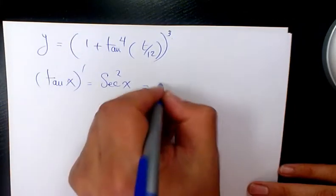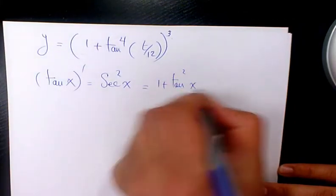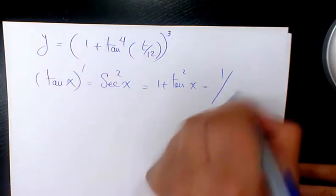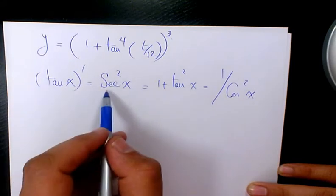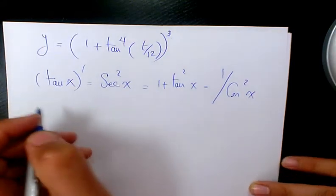Or, it's going to be 1 plus tan squared x. Or you can also say 1 over cosine squared. It doesn't matter which one you choose. Secant squared x is going to be the most common one.